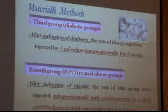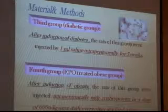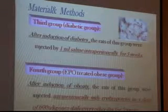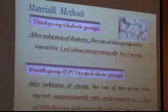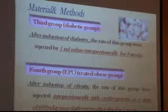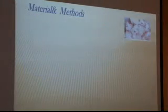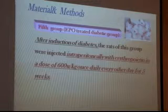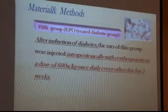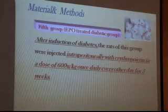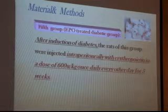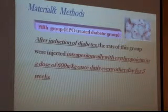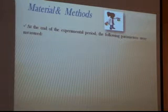The fourth group was the erythropoietin-treated obese group; after induction of obesity, the rats were injected intraperitoneally with erythropoietin at a dose of 600 IU per kg once daily every other day for 5 weeks. The fifth group was the erythropoietin-treated diabetic group; after induction of diabetes, the rats were injected intraperitoneally with erythropoietin at the same dose for 5 weeks.